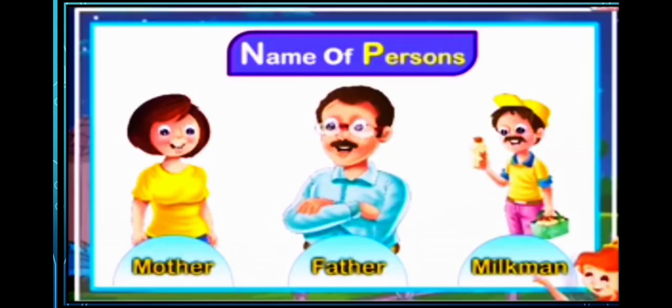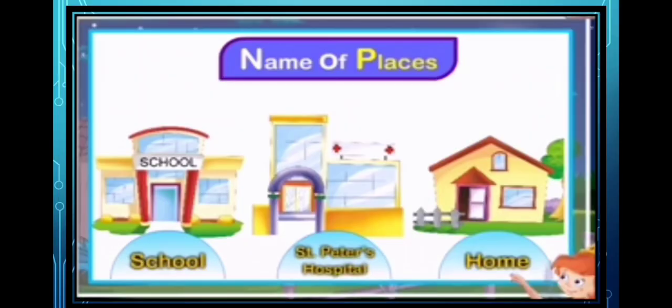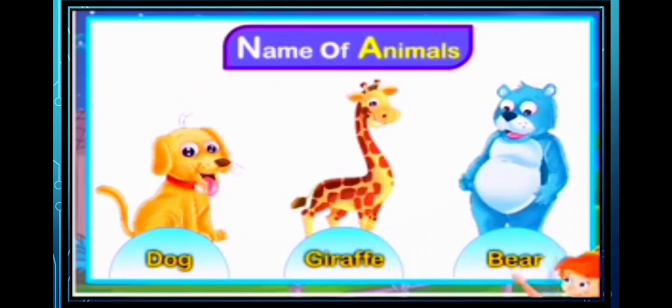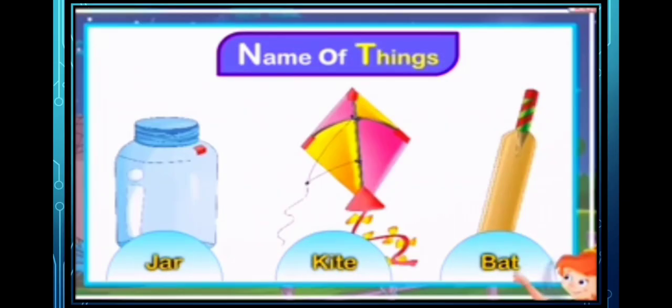Let's see some more examples. Name of persons: mother, father, milkman. Name of places: school, St. Peter's hospital, home. Name of animals: dog, giraffe, bear. Name of things: jar, kite, bat. So, we can say that a noun is a word that is used to name people, animals, things, places, etc.